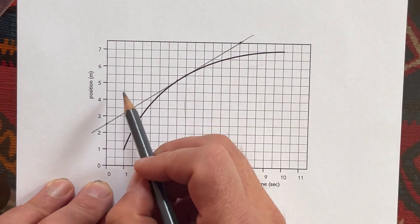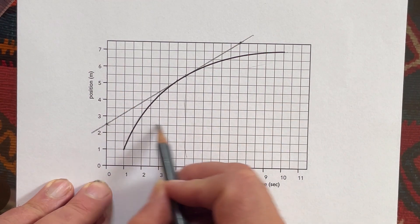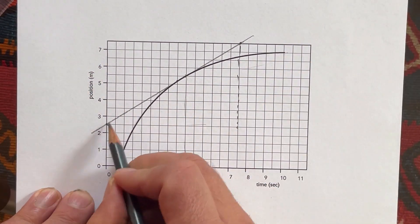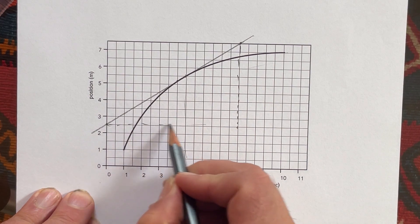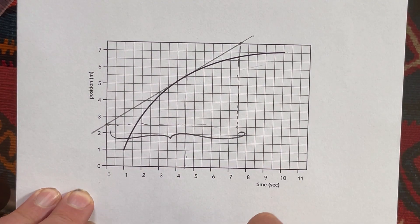What's the run? Like how far do we go horizontally from here to here? I'm going to mark this down. Here's my run. How long is it?